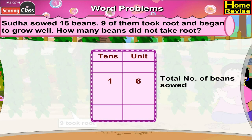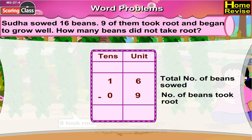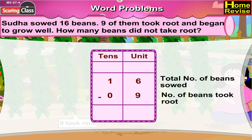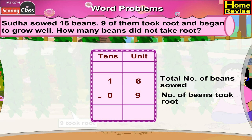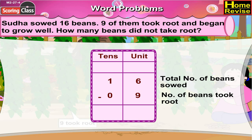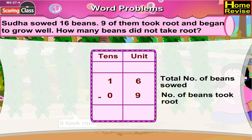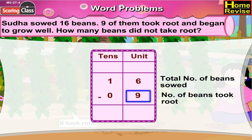Sudha sowed 16 beans, out of which 9 took root and began to grow well. In order to find out the beans which did not take root, we will have to subtract 9 from 16. That is 1 ten 6 units minus 9 units.